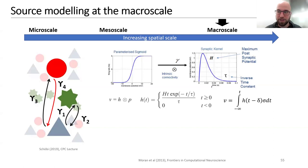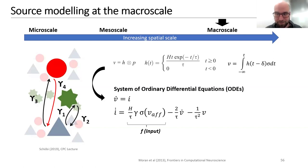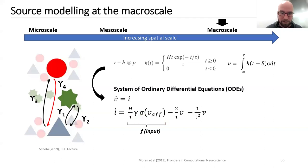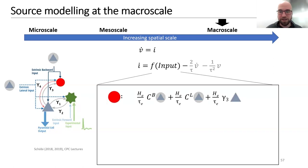Because integrals are difficult to deal with, it's easier to describe how the system changes over time using differential equations. Applying some mathematical tricks, we can transform this into a system of ordinary differential equations with two first-order equations: one describing the change in voltage and one describing the change in current. The part that is a function of input is where we'll focus; the other terms depend only on the current within the population.